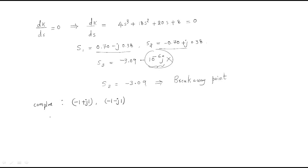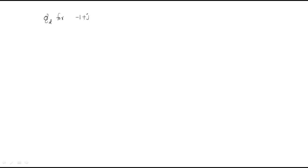Since we only have poles and no zeros here, we need to find the angle of departure, denoted as phi_d. We need to find phi_d for the pole at minus 1 plus j1.